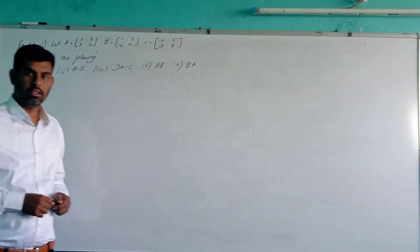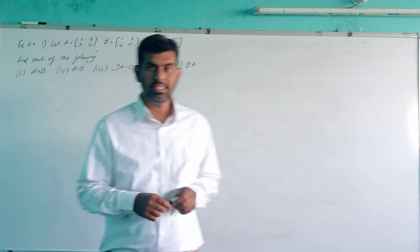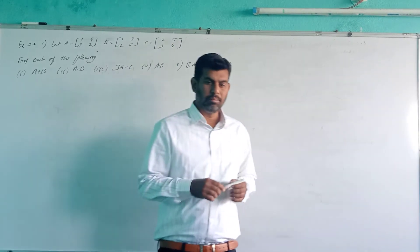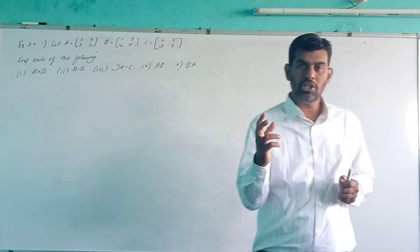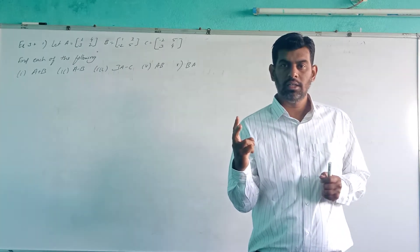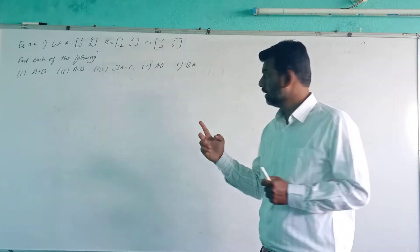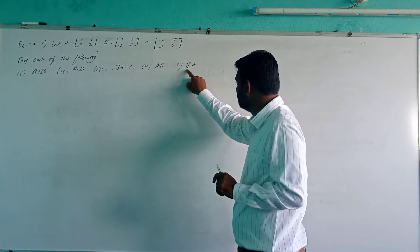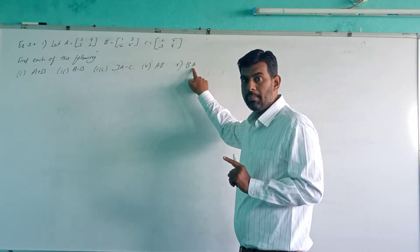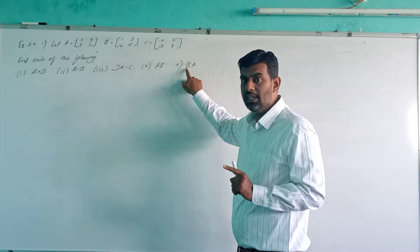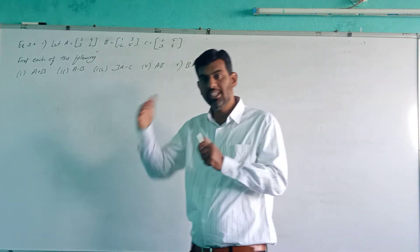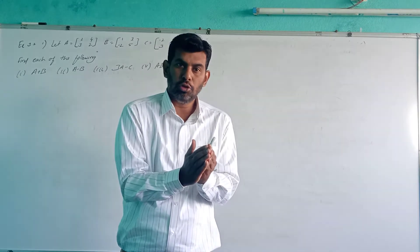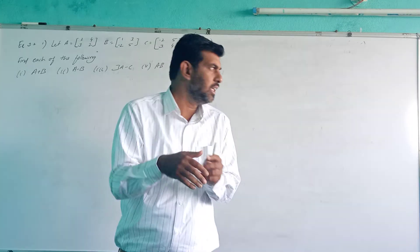Good morning students. As we have seen in the last class, matrix multiplication and the basic properties of matrix multiplication — multiplication of two matrices A·B or B·A is possible if the number of columns present in the first matrix is equal to the number of rows in the second matrix.